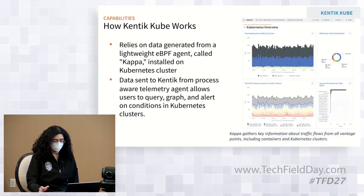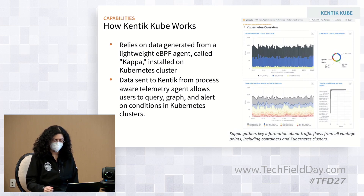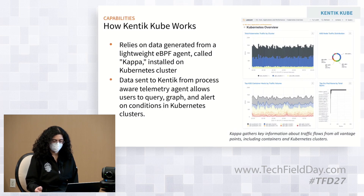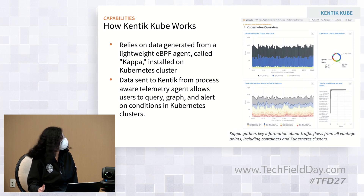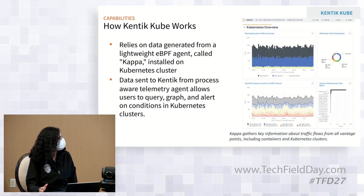Some background on how Kentik Cube actually works internally, now that we've talked about the UI and how users can utilize the tool. Kentik Cube works in the cluster by relying on data generated from a lightweight eBPF agent called Kappa that is installed in the Kubernetes clusters. eBPF is a kernel technology that improves observability, networking, and security in the Linux kernel. The data from that agent is sent to Kentik, and it allows the customer to query, graph, and alert on various conditions in the Kubernetes cluster.